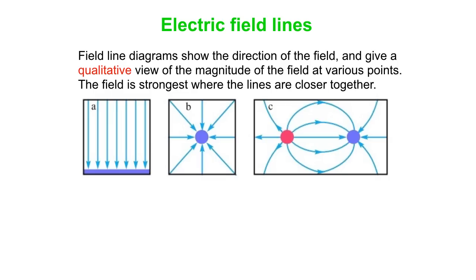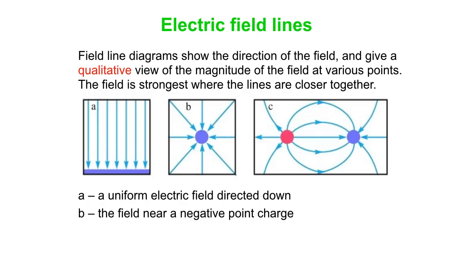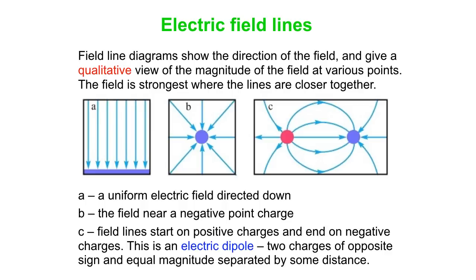How do we visualize electric fields? Sometimes we use field lines. This gives a qualitative view of the magnitude of the field at various points and shows what direction the field is going. The field is strongest where the lines are closer together. Picture A shows a uniform electric field directed down with equally spaced lines. B shows the field near a negative point charge with field lines pointing inward. C is an electric dipole.